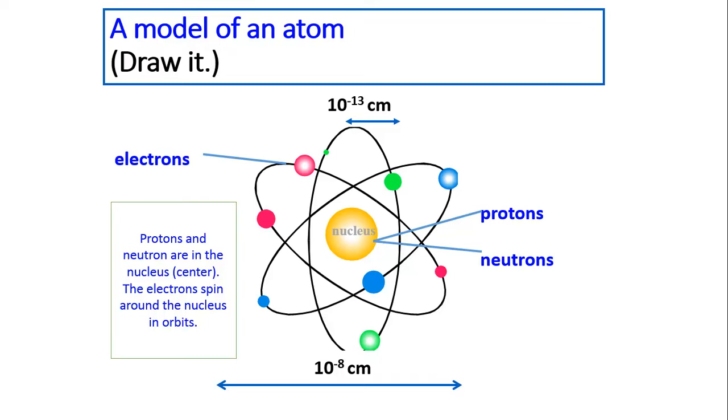This is a model of an atom. You need to draw this into your notebooks. In the center of an atom, we call it the nucleus. And the nucleus is made of protons and neutrons.